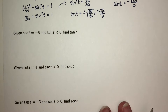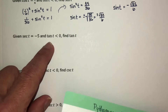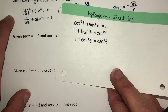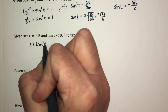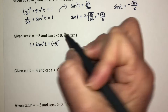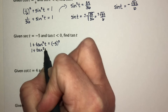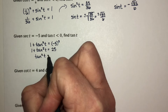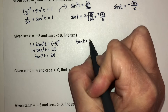For the next problem, we're given that secant of t is negative 5 and tangent is negative, and we need to find tangent. We have a Pythagorean identity relating secant squared and tangent squared. Plugging in: 1 plus tangent squared of t equals (−5)², which is 25. So tangent squared of t equals 24, and taking the square root gives tangent of t equal to plus or minus the square root of 24.